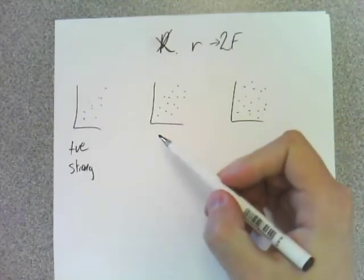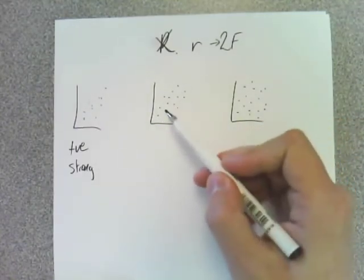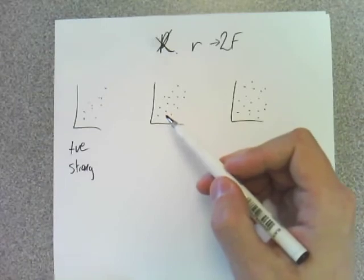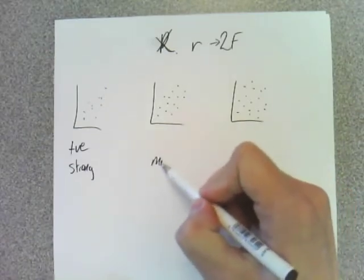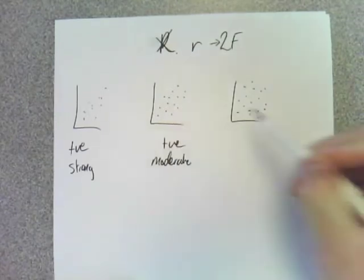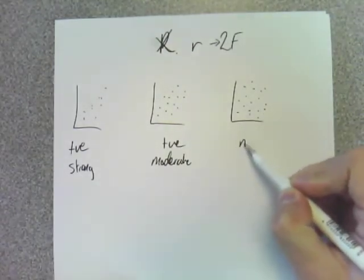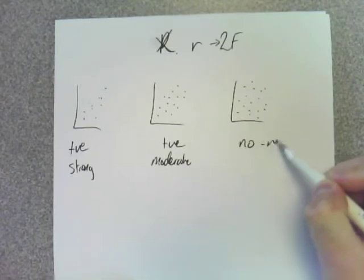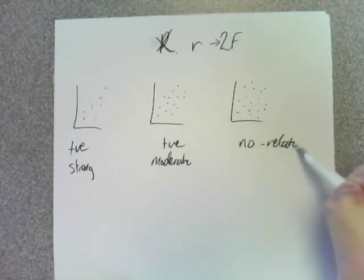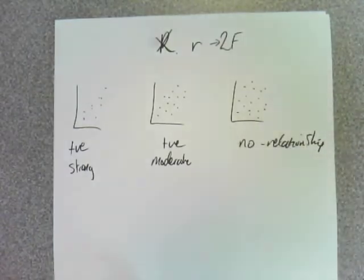We'll just stick with linear for now because this is only used for linear ones. What sort of relationship? Moderate. So moderate. And it's still positive. And this one? No. No relationship.